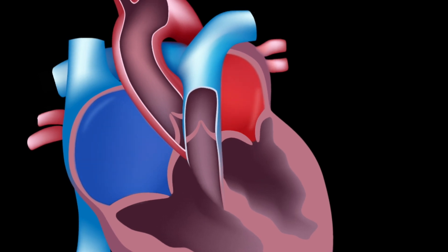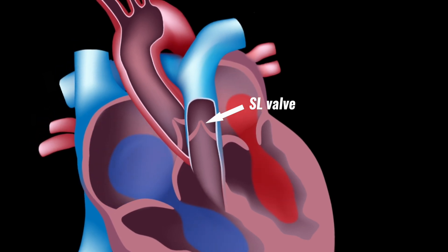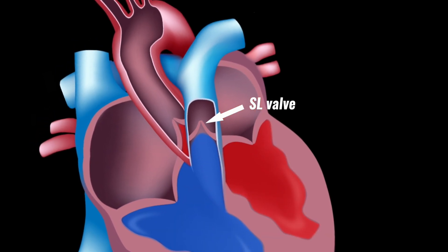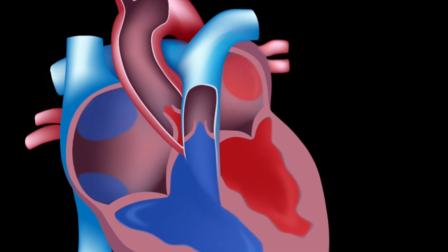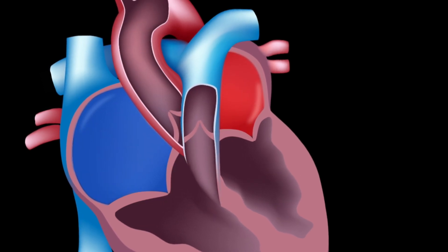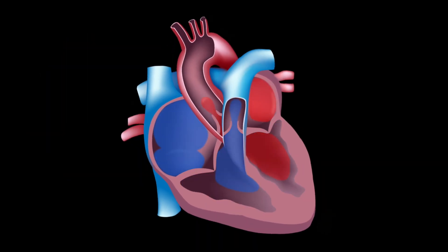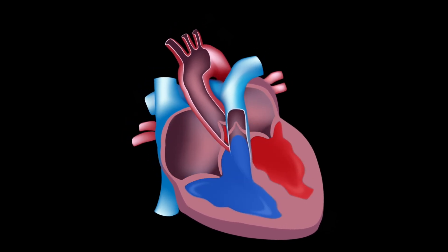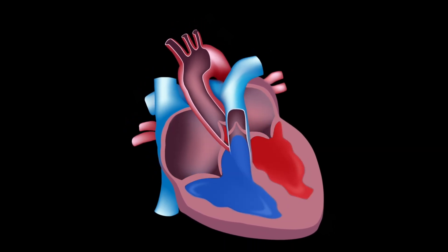There are also two other valves called the semilunar or SL valves. These are located between each ventricle and the artery leaving the heart, and again prevent the blood flowing backward. The heartbeat sound is caused by the snapping shut of first the AV valves and then the SL valves.